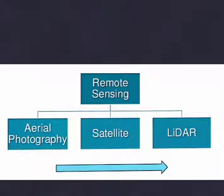Aerial photogrammetry, also called airborne imagery, is very useful as it gives you the easiness to work on a larger area with precision and can cover a maximum area with less time. Photogrammetry is a science and technology of obtaining reliable information about physical objects and the environment through the process of recording, measuring, and interpreting photographic images and patterns of electromagnetic radiant imagery.